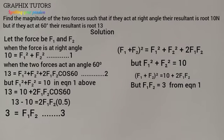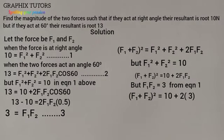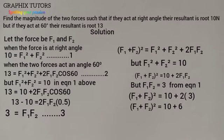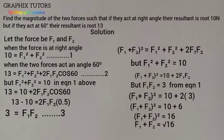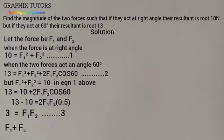From Equation 3, F1·F2 = 3. Substituting into the expression: (F1 + F2)² = 10 + 2×3 = 10 + 6 = 16. When the square moves to the right hand side it becomes a square root, and the square root of 16 is 4. So F1 + F2 = 4. I'll call that Equation 4.